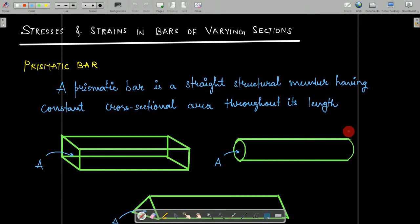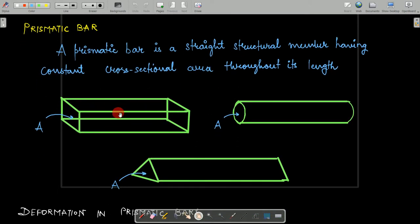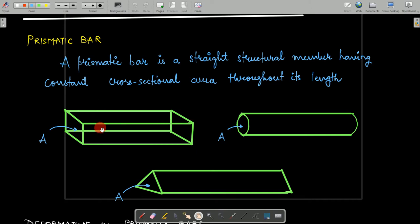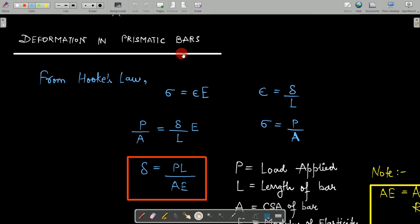We will study stresses and strains in bars of varying sections. A prismatic bar is an important term frequently appearing in strength of materials problems. A prismatic bar is a straight structural member having constant cross-sectional area throughout its length. As shown in the diagrams, whether the cross-section is rectangular, circular, or triangular, any bar having a uniform cross-sectional area throughout is called a prismatic bar.